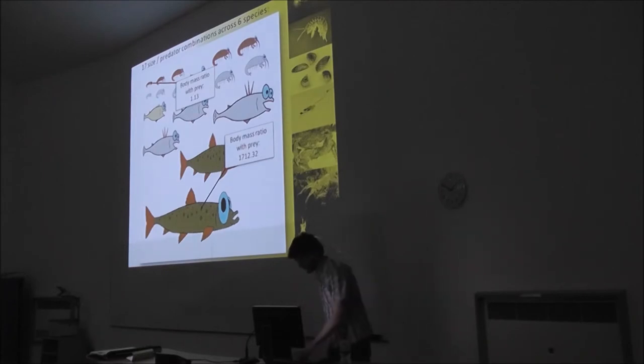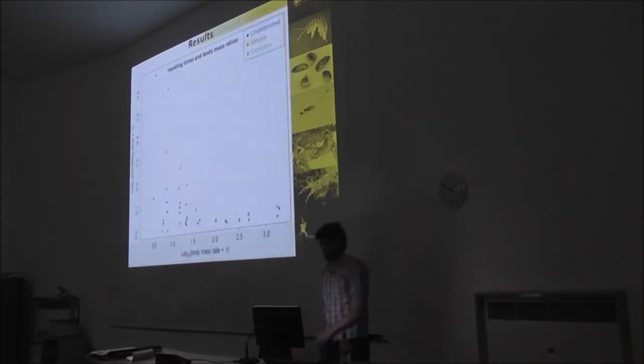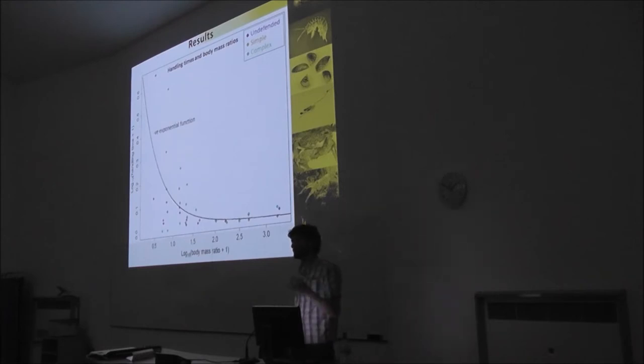So these are the results. So what we're looking at here is handling times on the Y and the body mass ratios on the X and the purple dots are the undefended prey, the prey defended in tubes are orange dots and the prey defended in tubes amongst stones are the green dots. You can do non-linear ANCOVA and decide that you can get rid of those contexts and lump all the data together and then fit a negative exponential function to those data and it's not overly surprising that context doesn't really alter handling times because handling times are supposed to be grounded in the physiological limitations of those predators and that that's grounded in their size ultimately.